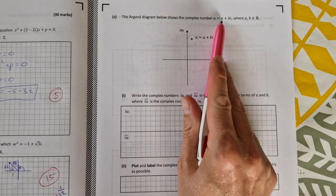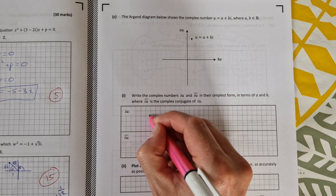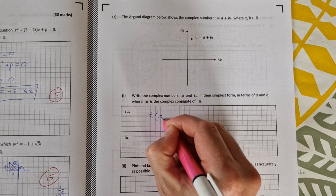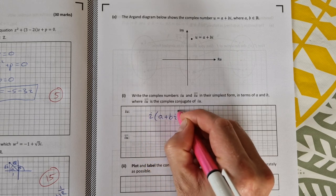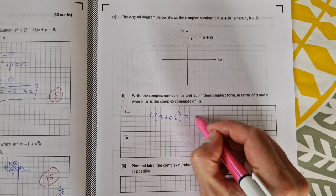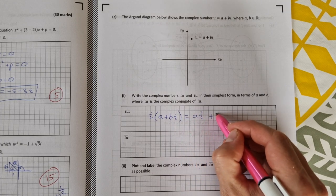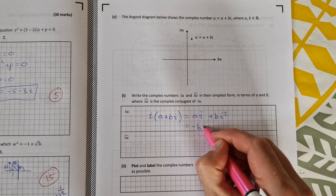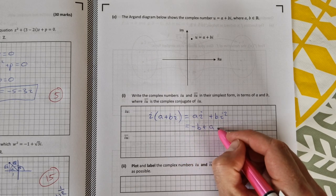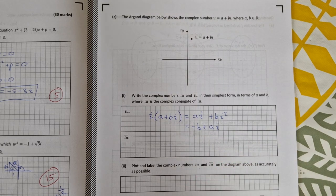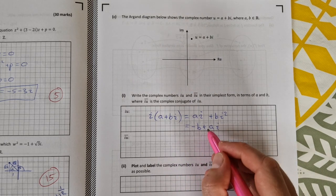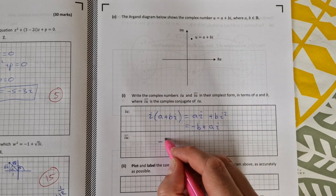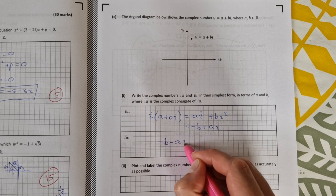To get iu, I just multiply this by i. So that would be i times (a plus bi). That would work out to be ai plus bi squared. i squared is minus 1, so that's going to be minus b plus a times i. And now the complex conjugate of that is just changing that sign there, so that's minus b minus a times i.